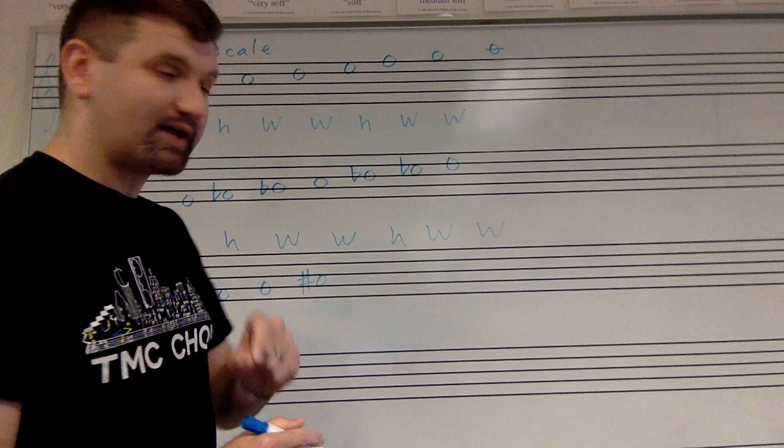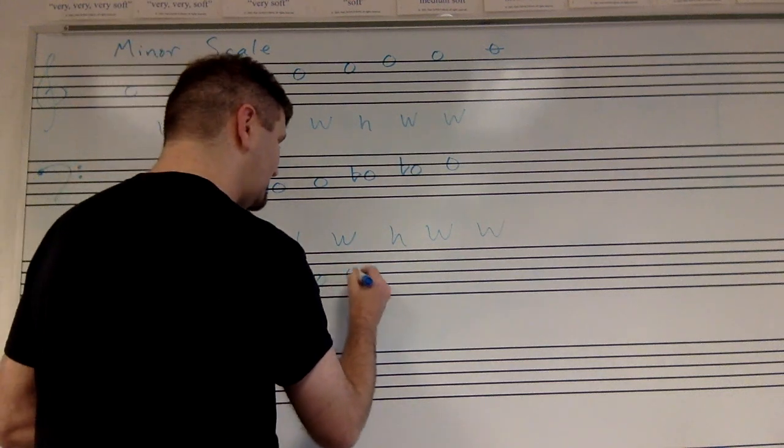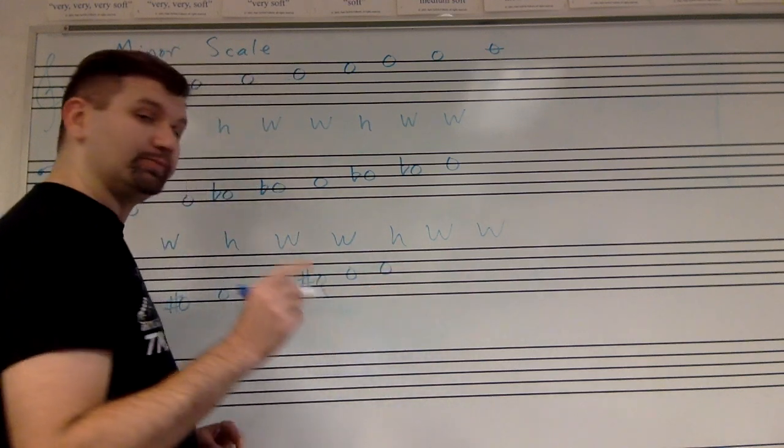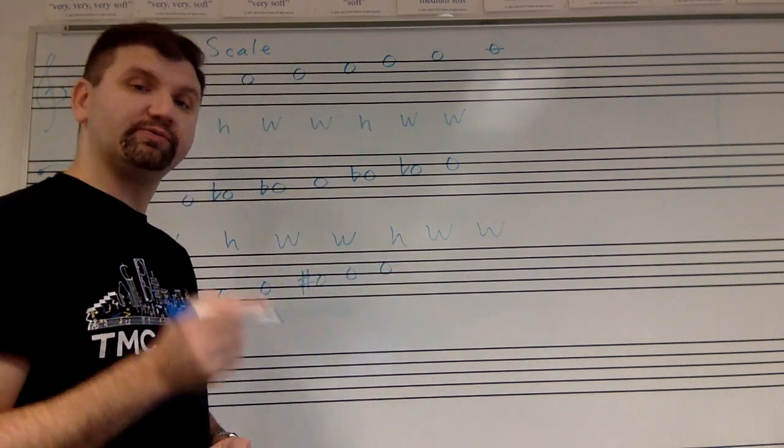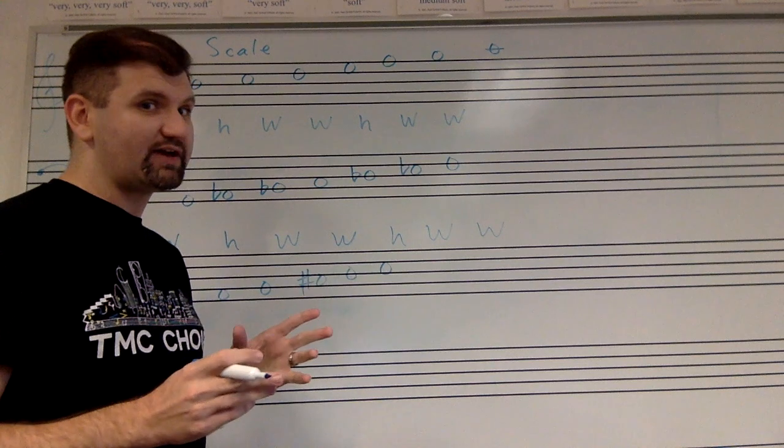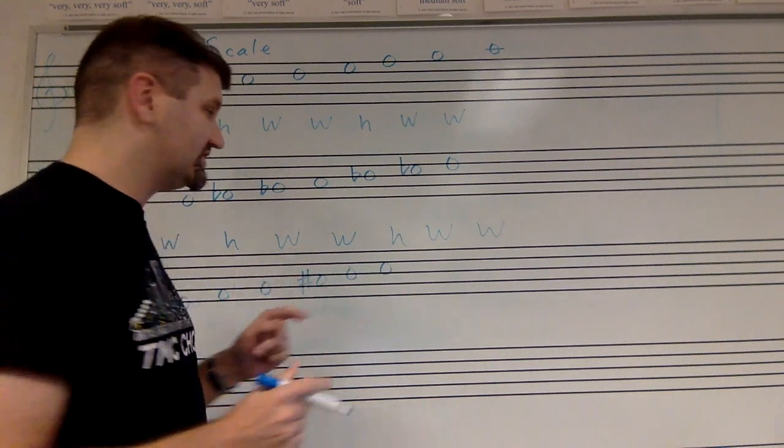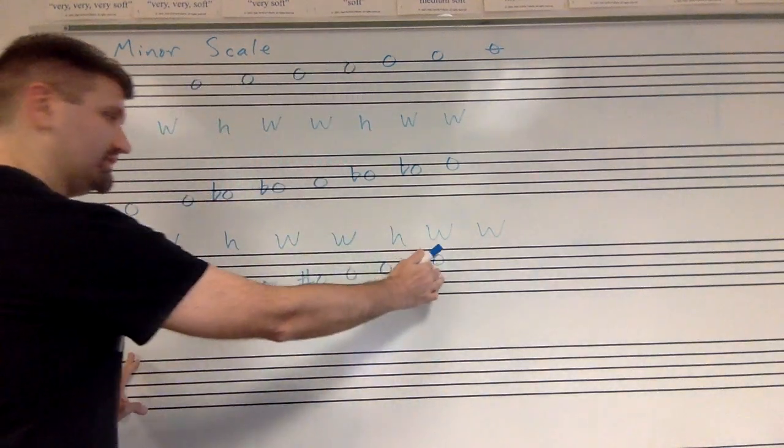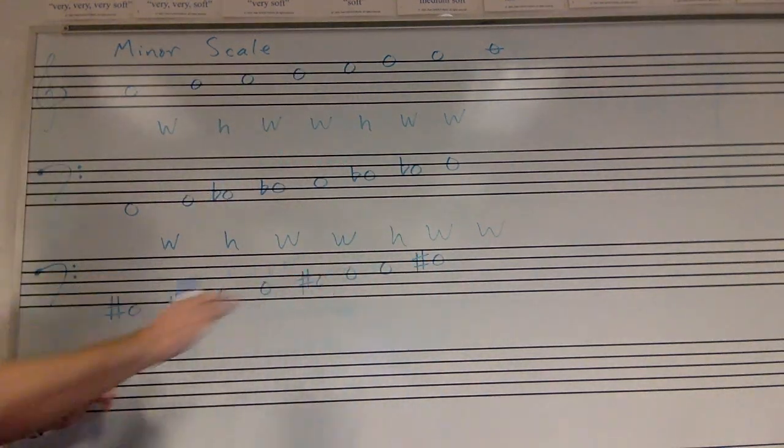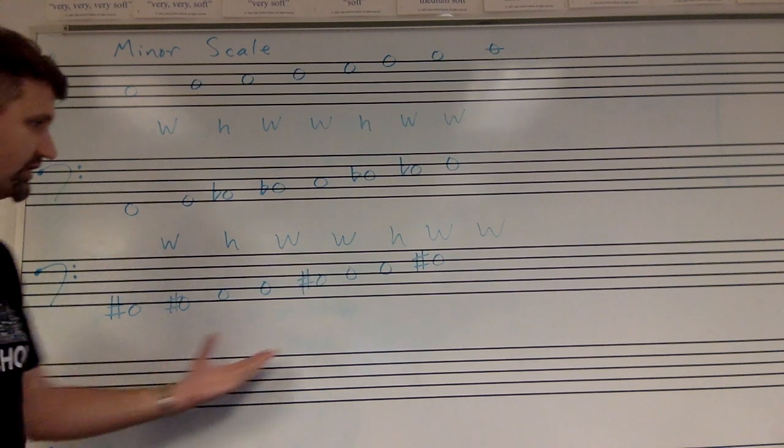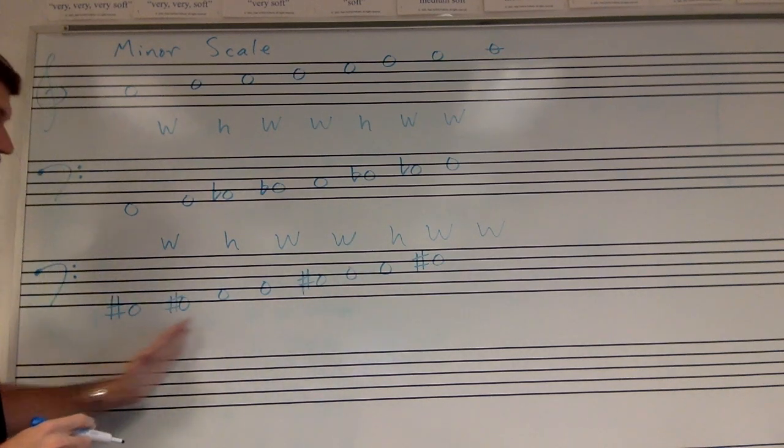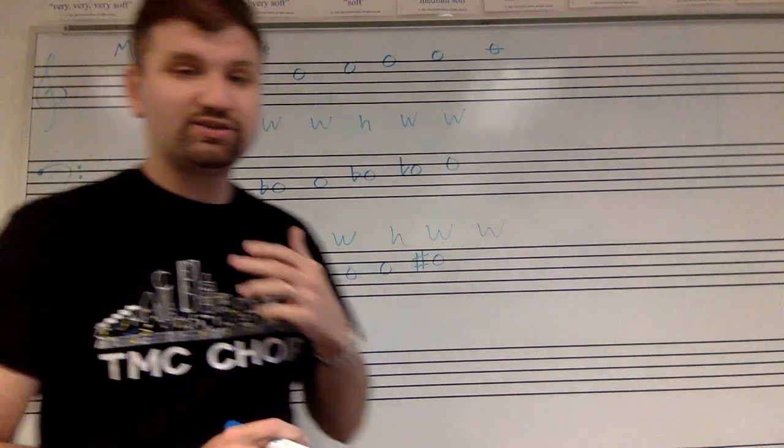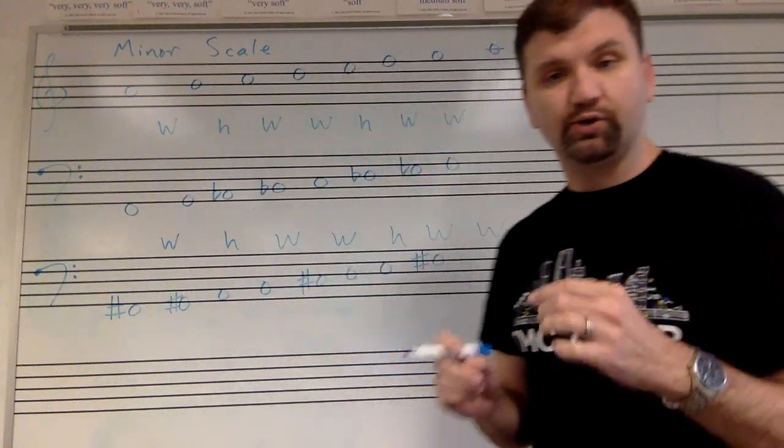Now a half step up from C sharp gives us D. A whole step to E. And we need another whole step up from E, which is not F, because that's a half step. So then it ends up being F sharp. And again, we start and end on the same note, characteristic of standard scales. Each note is a different letter in the alphabet, so we've used each letter once and only once.